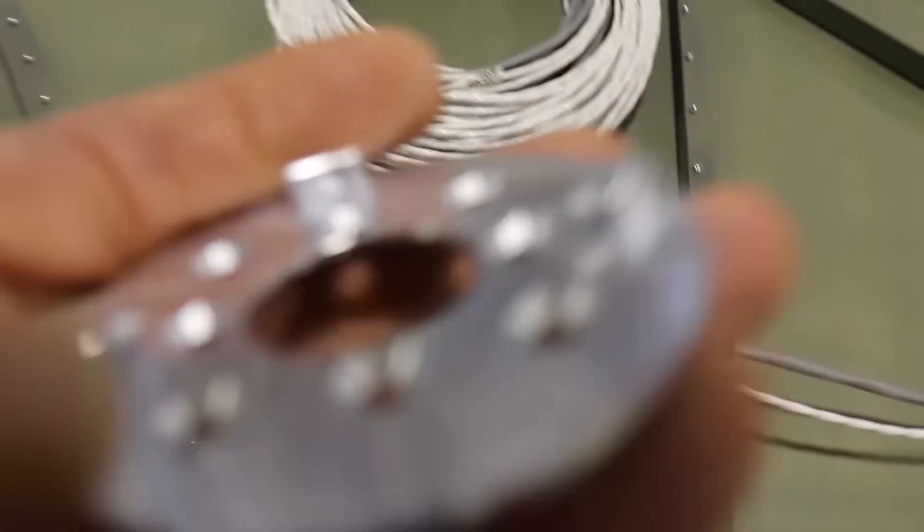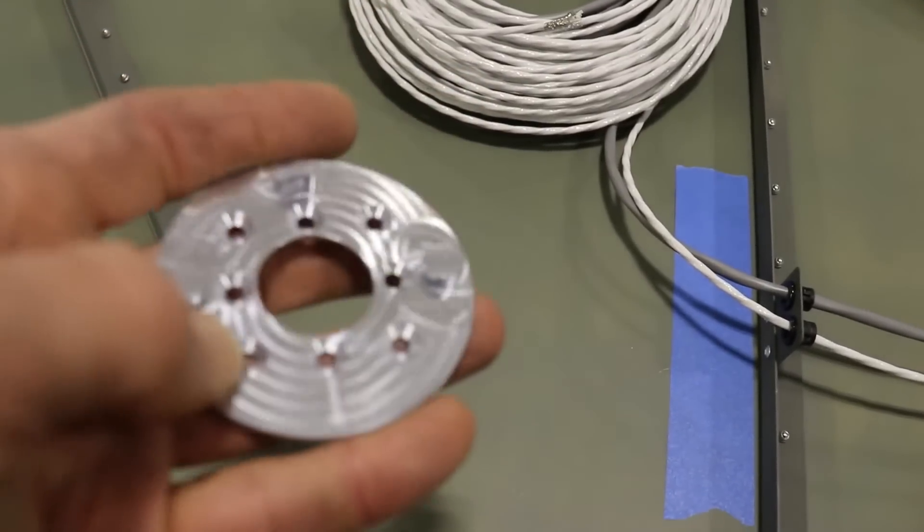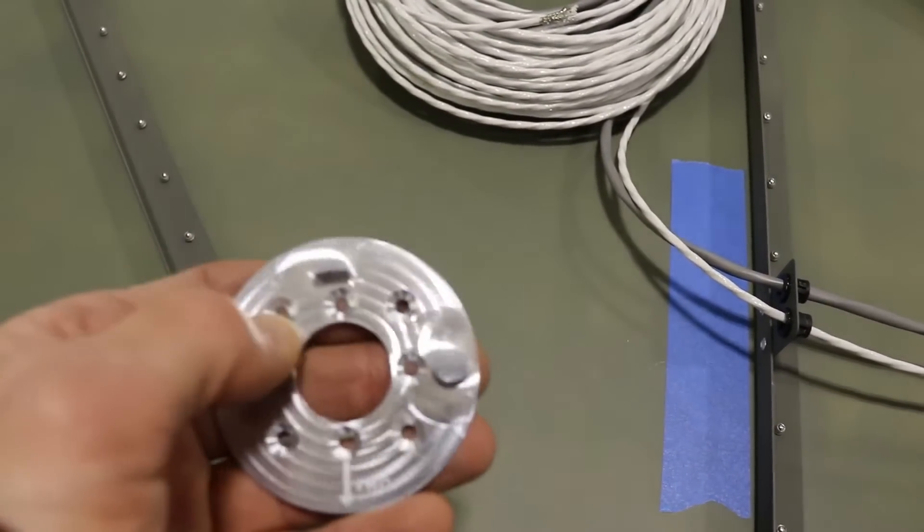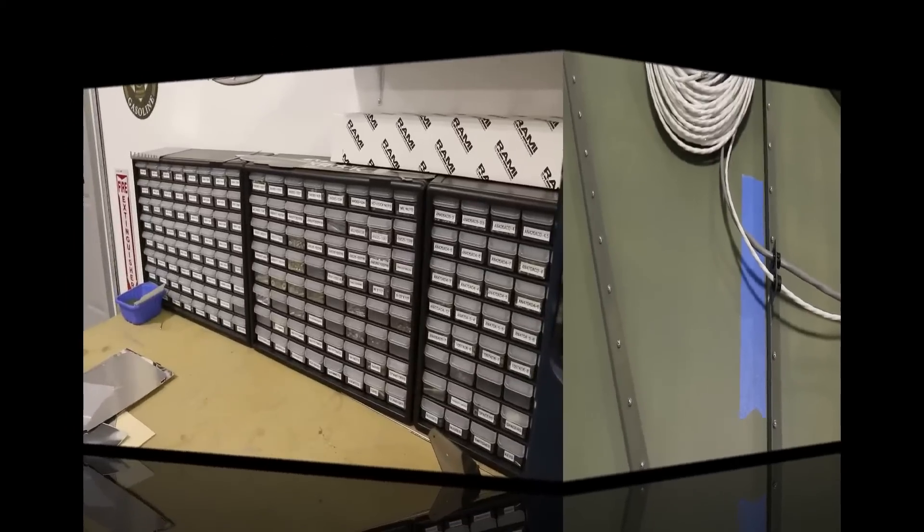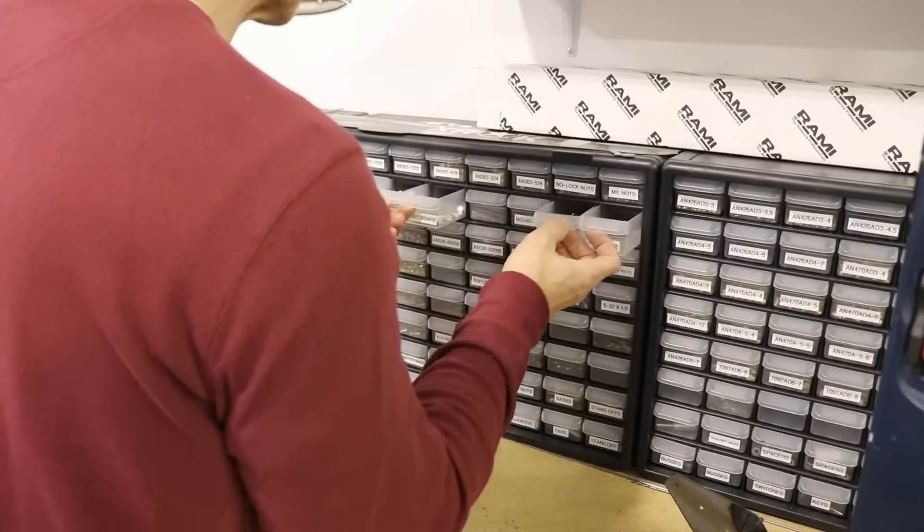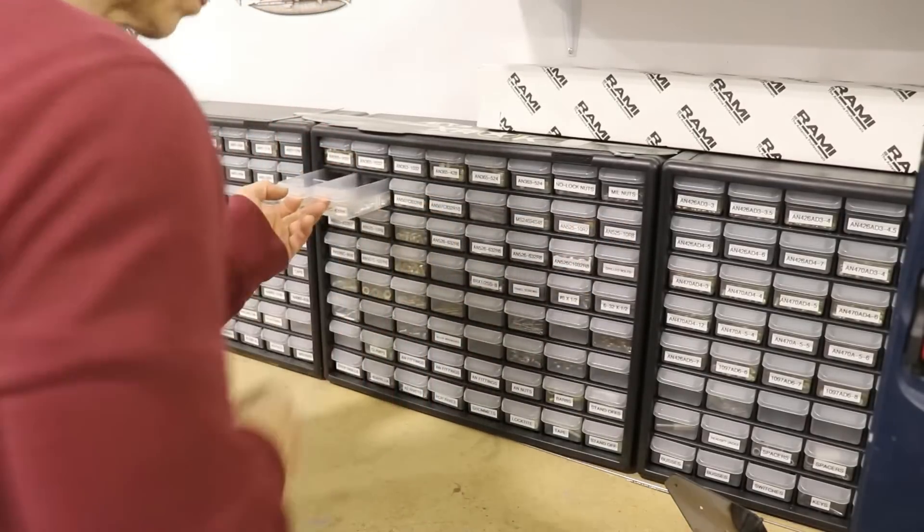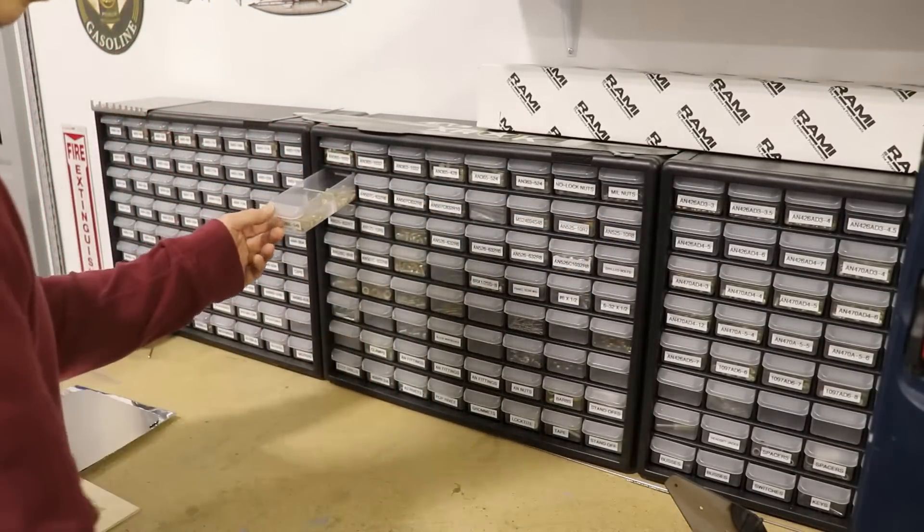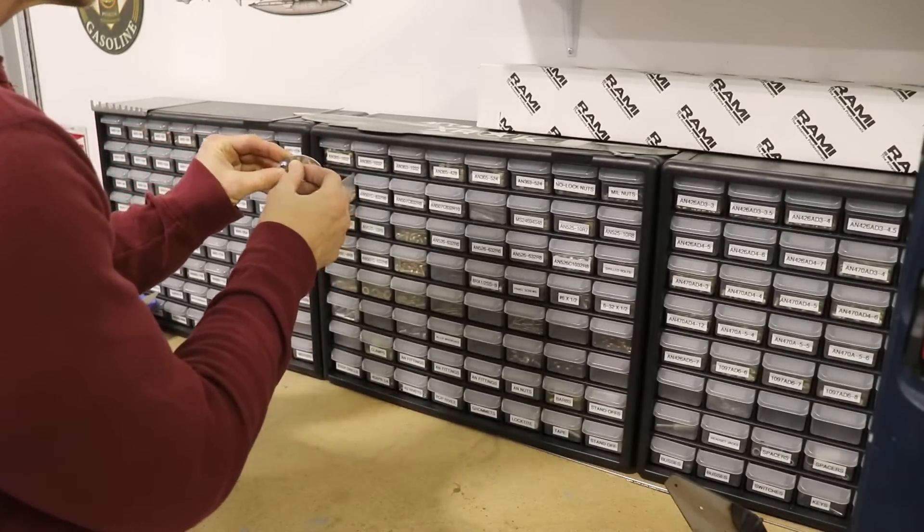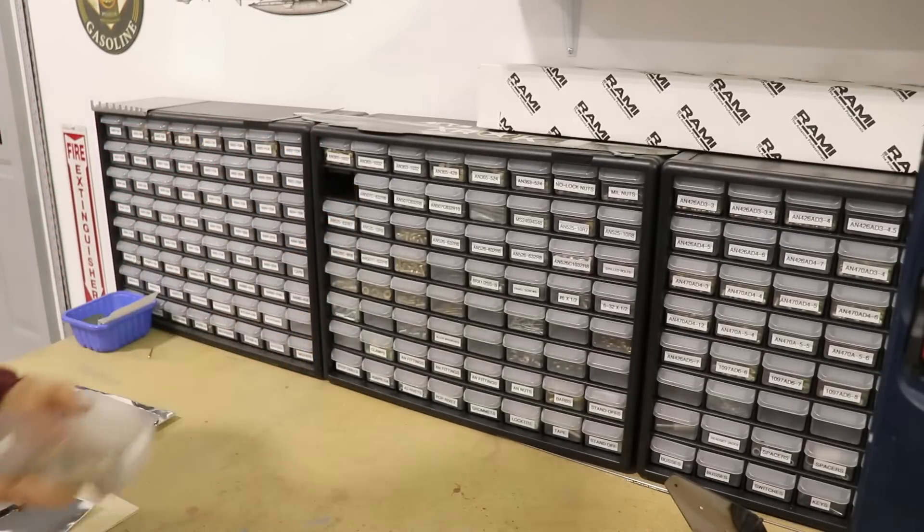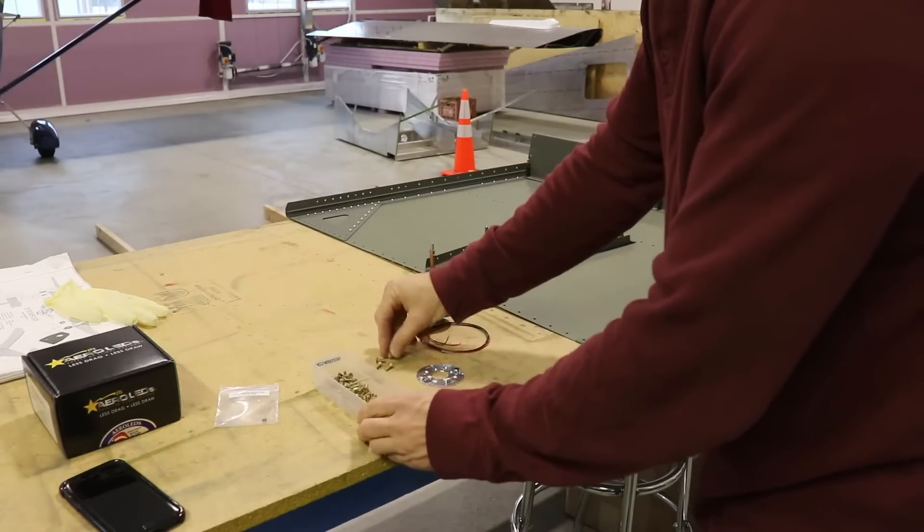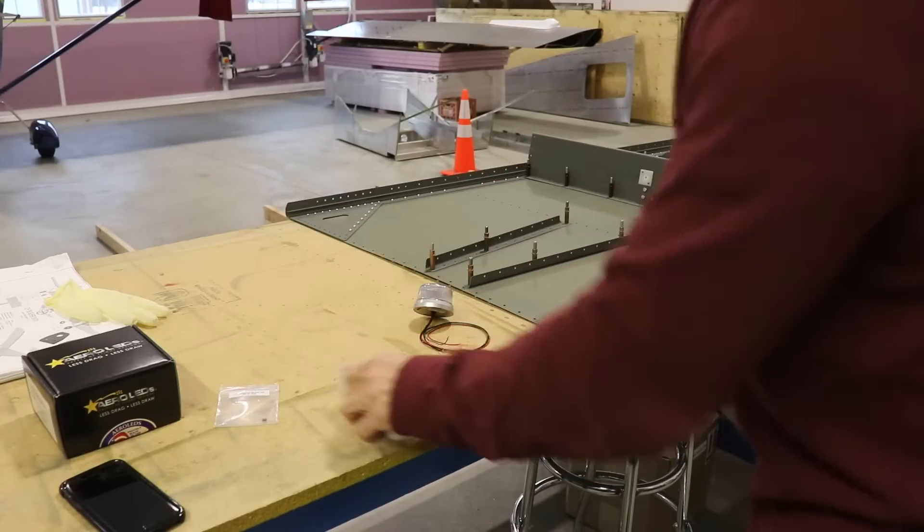You can see, or maybe you can't see, that these holes are countersunk, so you need a countersunk screw to mount this to the skin. If you are building an airplane, I think you will find it handy to have a large bench stock of hardware. Every time I go to Oshkosh I load up on nuts and bolts and washers and clamps and nut plates and all kinds of stuff, because in times like this when you need a certain screw, it's pretty nice to be able to go to your own bench stock, grab the screws you need, and continue on without delay.